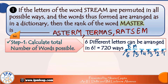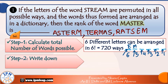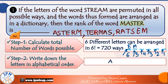Remember, our required word is master, so its rank will obviously fall in the range 1 to 720. The next step is to write down the letters in alphabetical order. Because in a dictionary, words are arranged in alphabetical order of letters. So for master, A comes first, then E, followed by M, then R, S, and finally T.